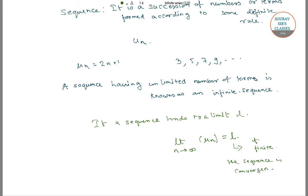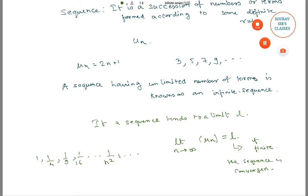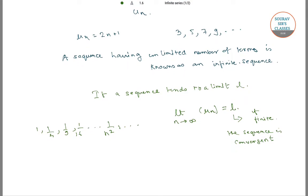For example, the sequence 1, 1/4, 1/9, 1/16, and so on — that is, 1/n² and so on — tends to 0. So this sequence is a convergent sequence.